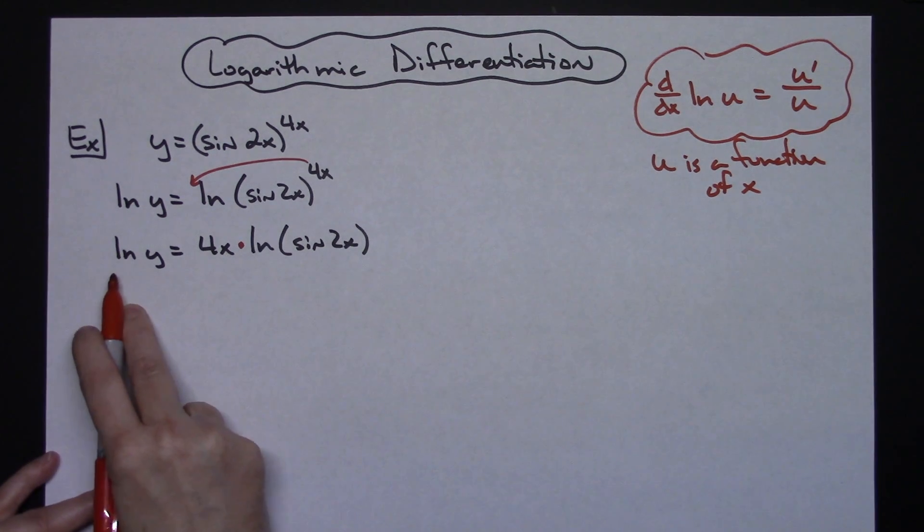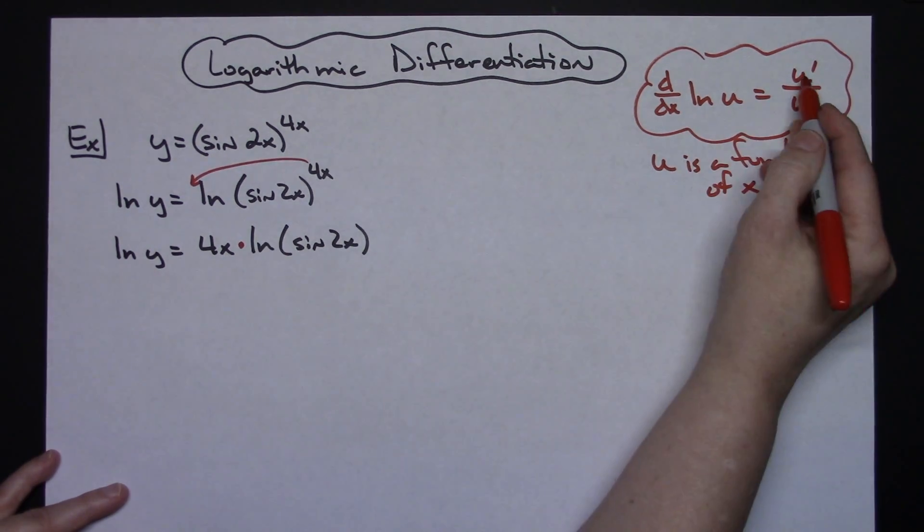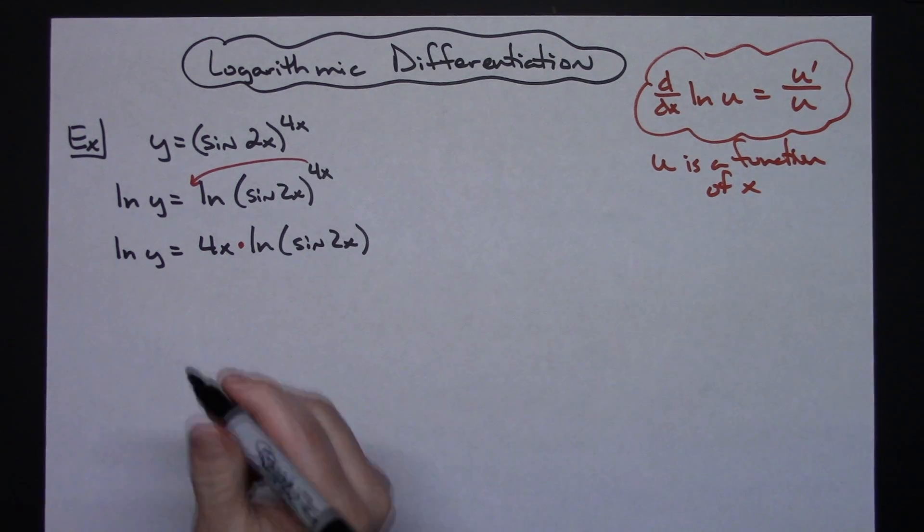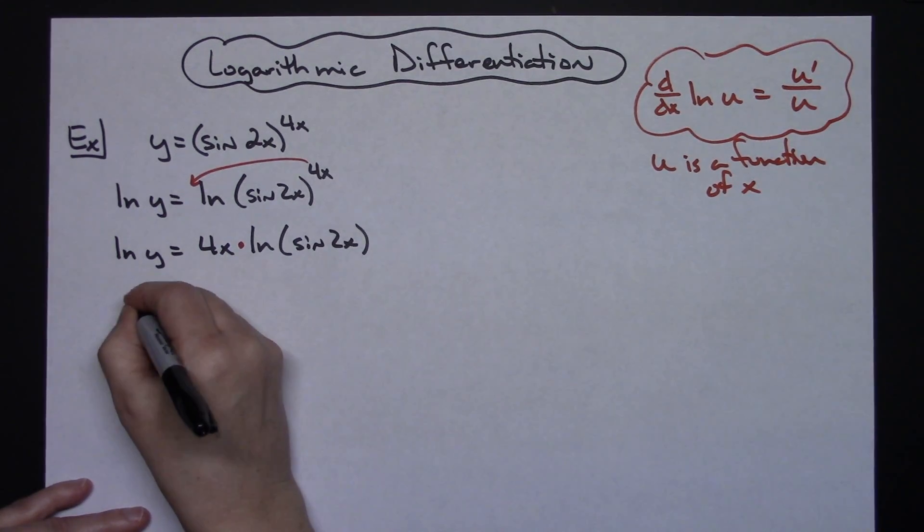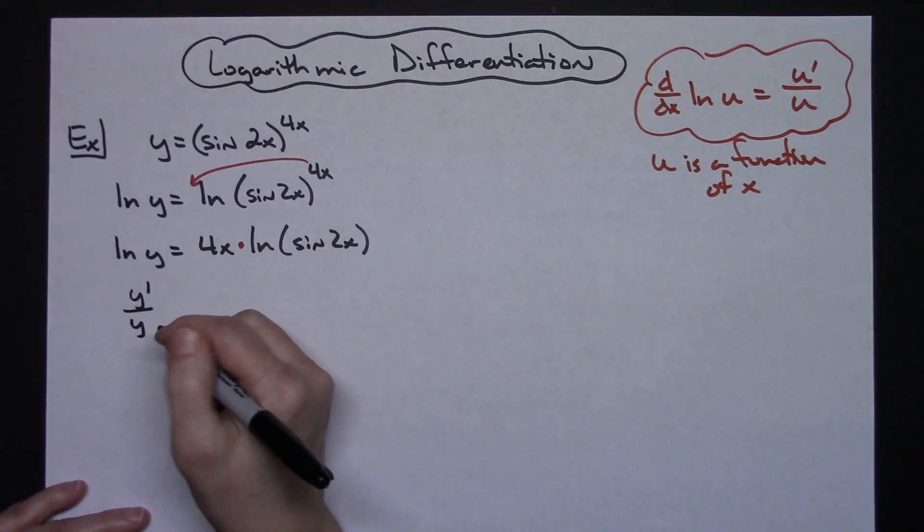So I've got the natural log of y. I need u prime over u. So to take the derivative right here, I'll have a u prime or y prime over y, which is the u prime over u formula.